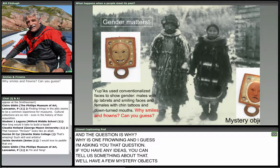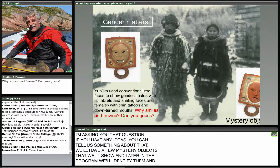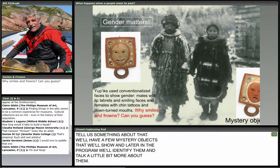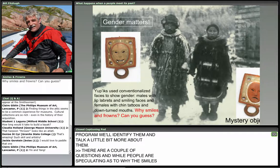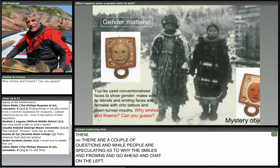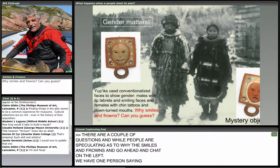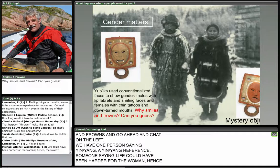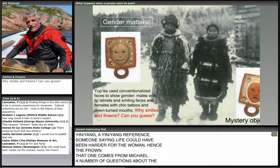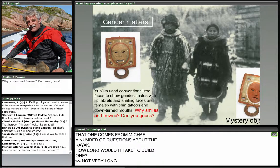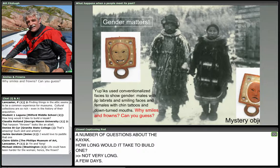We'll have a few mystery objects and identify them later in the program. People are speculating about the smiles and frowns — one person says yin-yang, Michael says life could have been harder for the woman. There are also questions about the kayak — how long would it take to build one? Not very long, a few days. You make thin strips of wood and bind them together. The most difficult part is carving the bow and stern pieces that form the shape of the boat. The whole key is the skin that covers it — mostly seal skin, because they had to be able to lift the kayaks in and out of the water very easily.